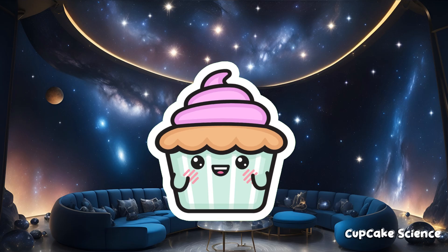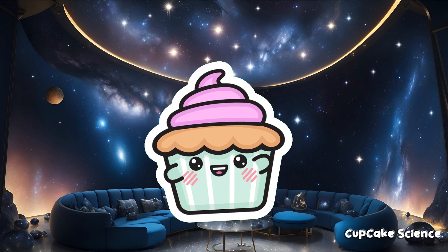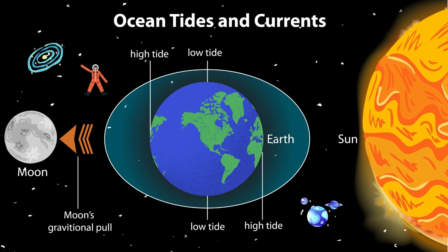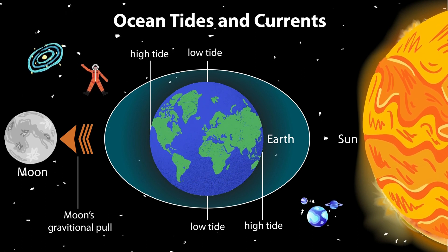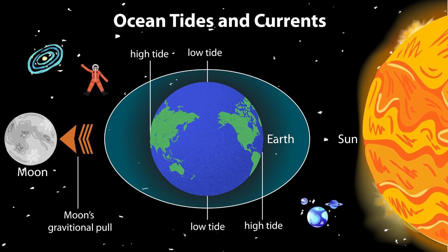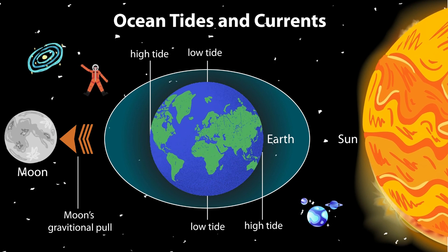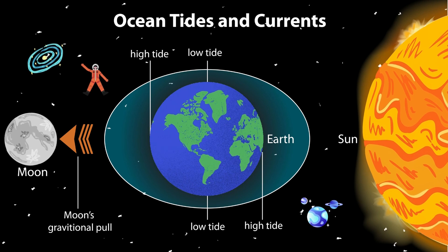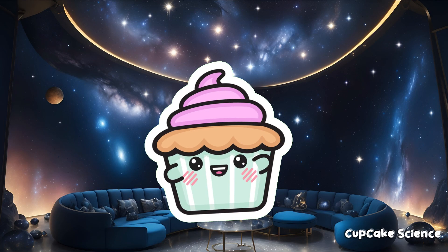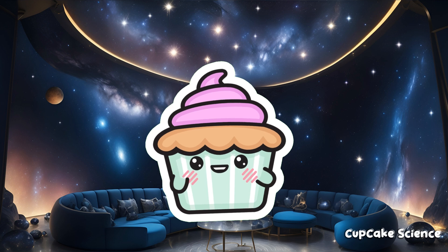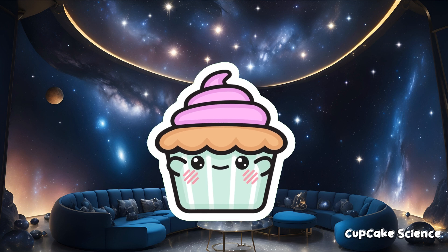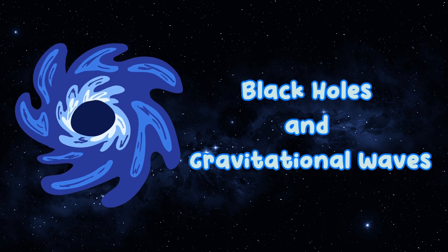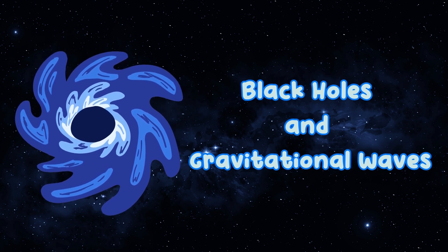Gravity and tides. Did you know that gravity also affects the oceans? The gravitational pull of the Moon and the Sun creates ocean tides. When the Moon's gravity pulls the water on Earth, it causes high and low tides, giving us the rhythm of the oceans. Tides are fascinating displays of the harmony between celestial bodies and our planet.